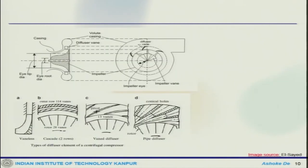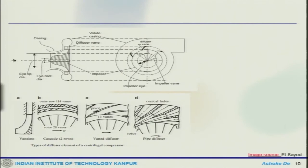Looking at a cut section of the image, you can see the impeller, the shaft, the diffuser vanes, and the volute casing. There are impeller vanes, tip diameter, root diameter, and other features. The whole idea of the impeller is that when the fluid comes through, it goes through the rotation and finally goes out in the radial direction. These are the different components, and that also leads to the diffuser.